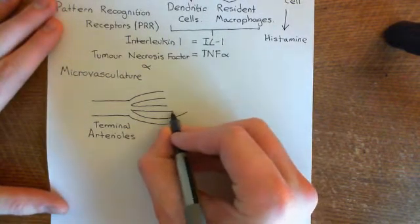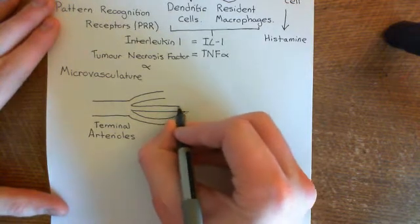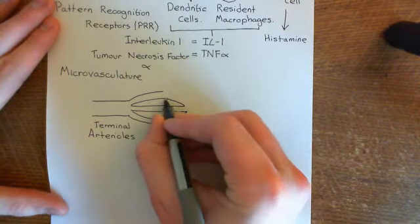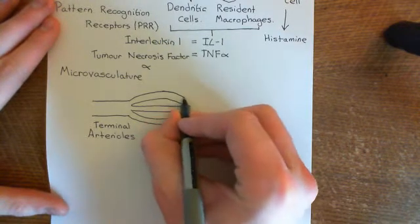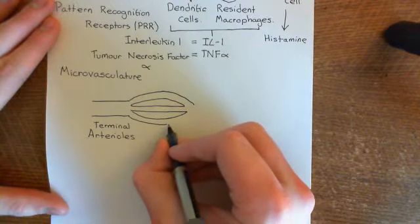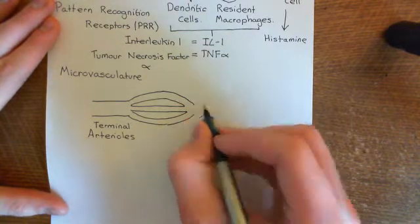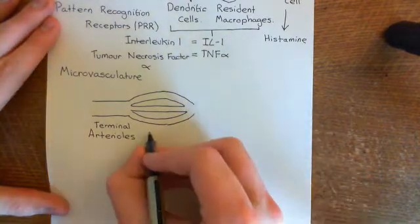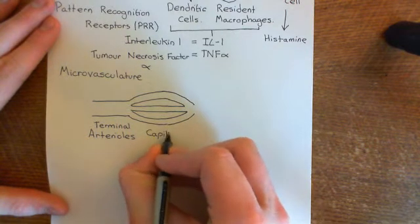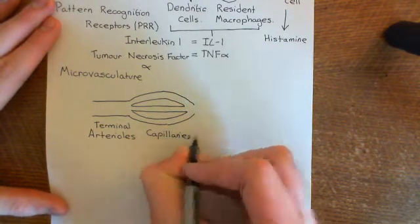This is where you're going to get exchange of nutrients and waste products, basically. This is where oxygen and glucose will leave the blood, and carbon dioxide will come back into the blood. So these are the capillaries, where normal exchange occurs.